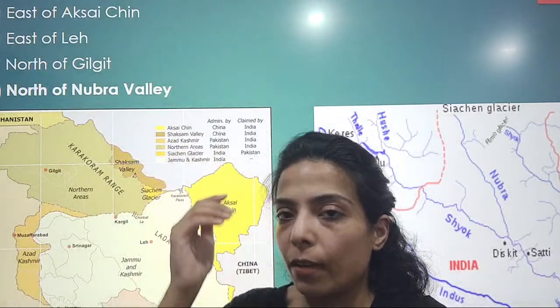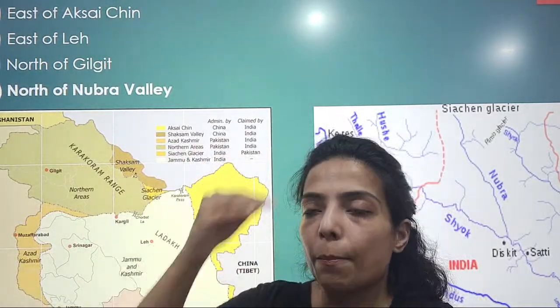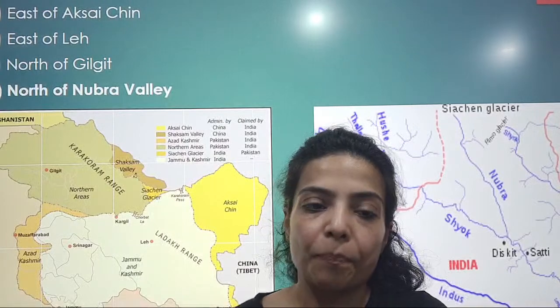Siachen Glacier is situated to the north of Nubra Valley. This was very interesting and obvious, because the Ladakh area has been very much in news because of the China-India standoff. Siachen Glacier and Pakistan have also been in the news. The answer is North of Nubra Valley. If we look at the map, the Shyok River or Nubra River is to the north of Nubra Valley, and the Siachen Glacier is above that.